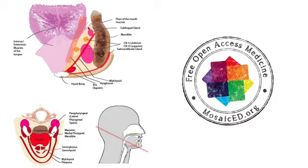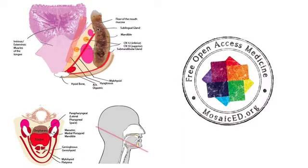So we're going to define the boundaries of the submandibular space. It extends from the floor of the mouth and the mucosa of the mouth downwards to the investing layer of fascia between the hyoid and the inferior border of the mandible. The lateral and anterior border is the mandible, and medially it's the muscles of the tongue — specifically the hyoglossus and genioglossus — that provide the medial border.